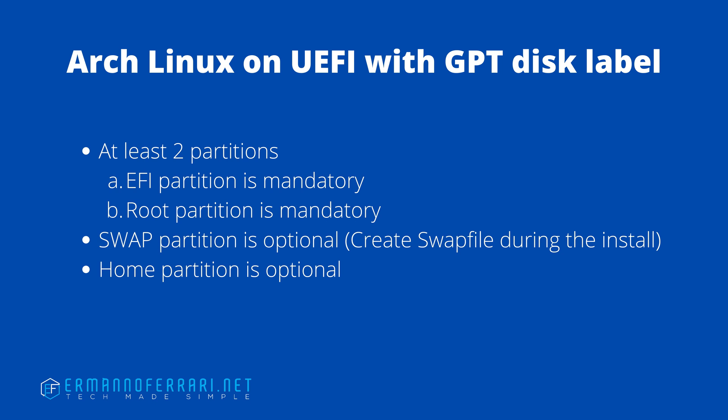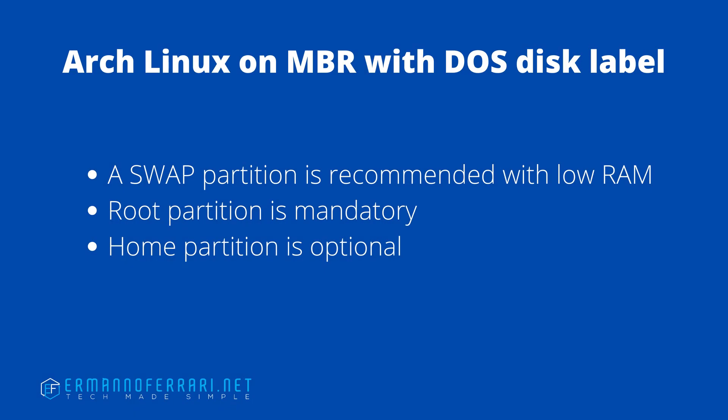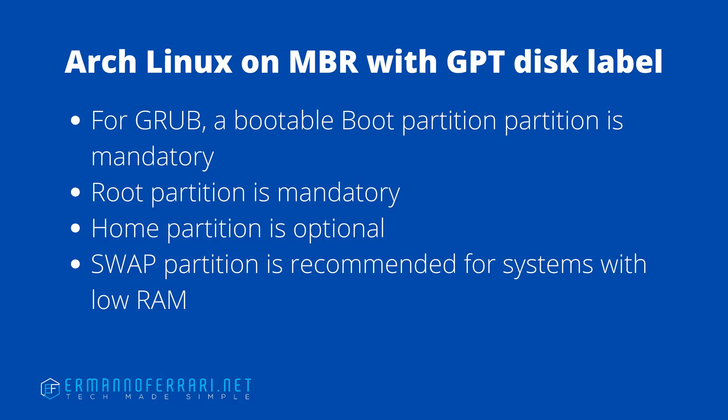When dual booting with Windows, the EFI partition is already present because it was created by the Windows installation, but the root partition is still mandatory. If we want to install Arch Linux on an MBR system with a DOS disk label, a swap partition is recommended especially if you have lower RAM, a root partition is mandatory, and a home partition is optional.